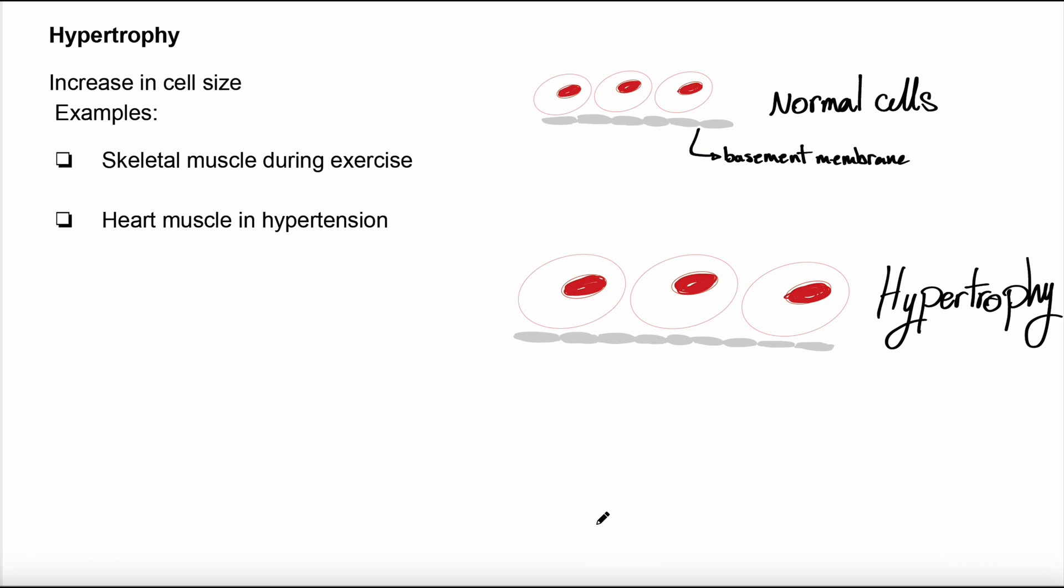It's driven by mechanical load and hormonal stimulations. For example, when you exercise a lot, it leads to increased protein synthesis. You're going to have bigger muscle cells. Or in cardiac hypertrophy, chronic hemodynamic overload causes left ventricular hypertrophy. Or in pregnant uterus we have hormonal stimulation which leads to both hyperplasia and hypertrophy.